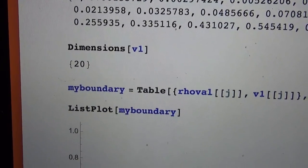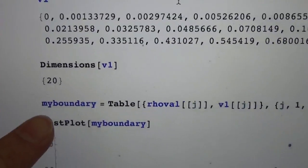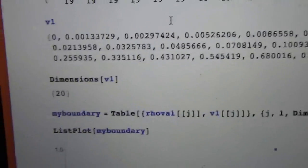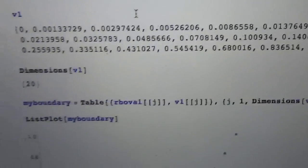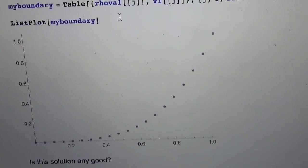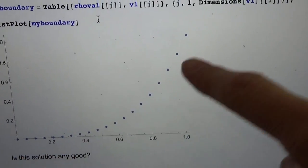What I'm going to do here is show a plot of the solution using a table function. So I use table with rho and V1. When I do that, I get a solution that looks something like that.